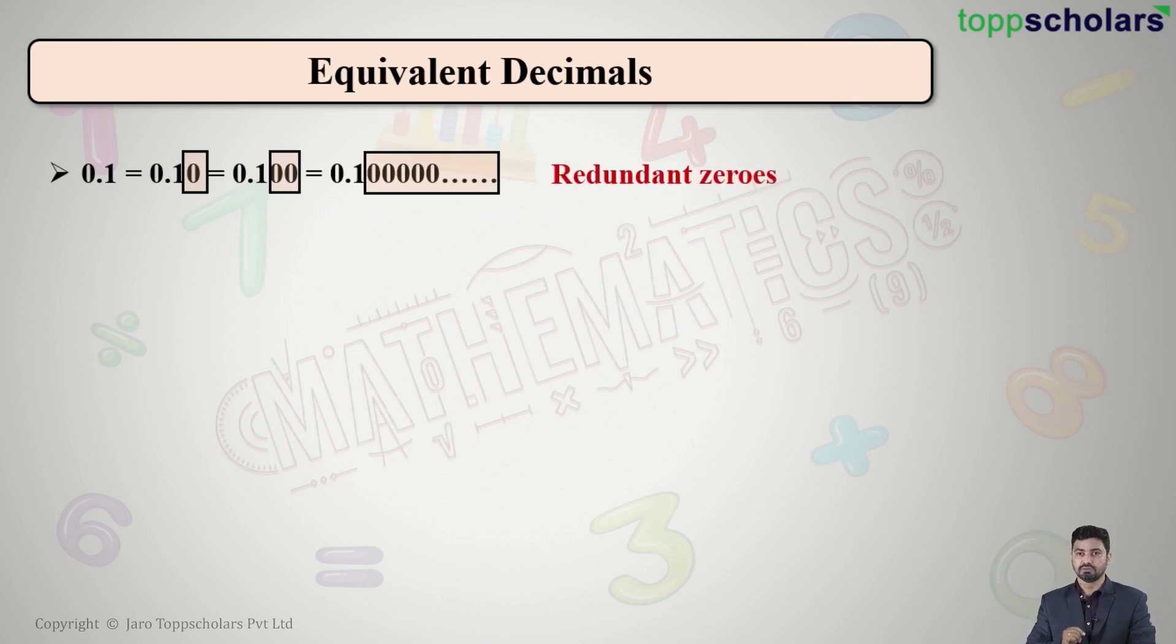These zeros at the extreme end of a decimal number are known as redundant zeros. This is similar to our original concept of whole numbers where we had 1 is also equal to 01 is also equal to 001 is also equal to 0001, which means the zeros on the extreme left of a whole number or the zeros before a whole number have no values.